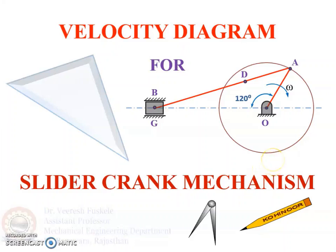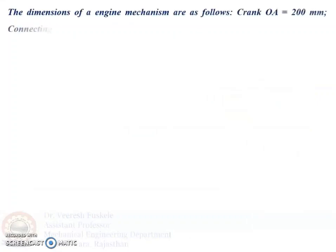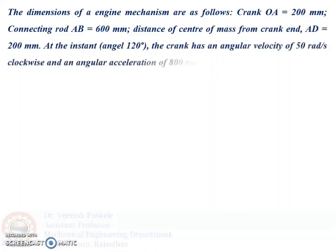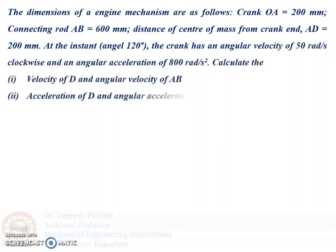To draw the velocity diagram of the slider crank mechanism, we have taken up the following problem. The dimensions of an engine mechanism are: crank OA = 200 mm, connecting rod AB = 600 mm, distance of center of mass from crank end AD = 200 mm. At the instant when the crank is at 120 degrees, the crank has an angular velocity of 50 radians per second clockwise and an angular acceleration of 800 radians per second squared.